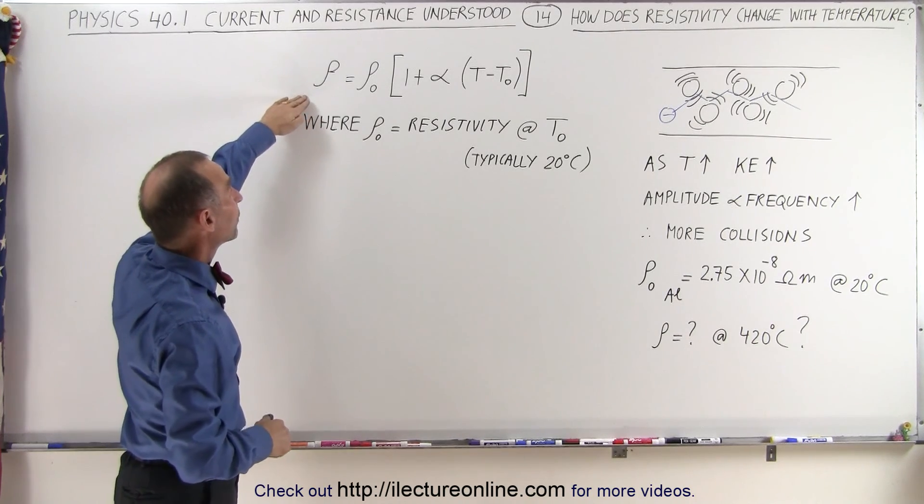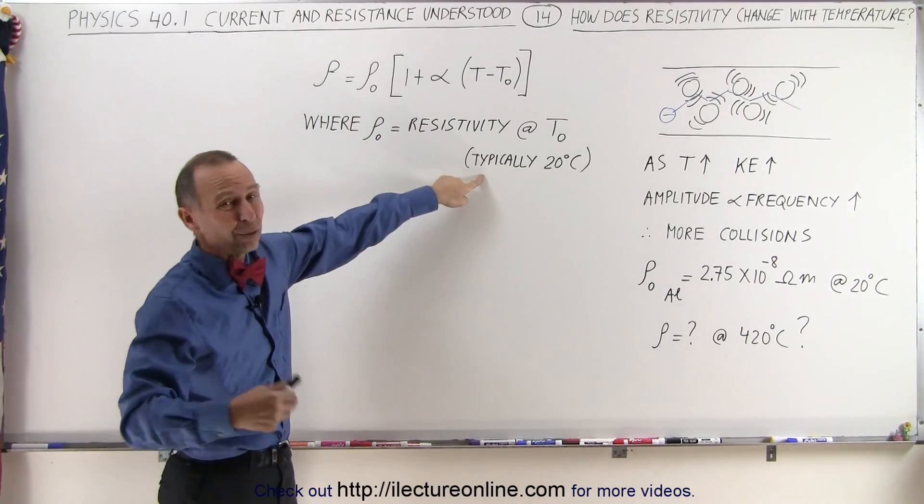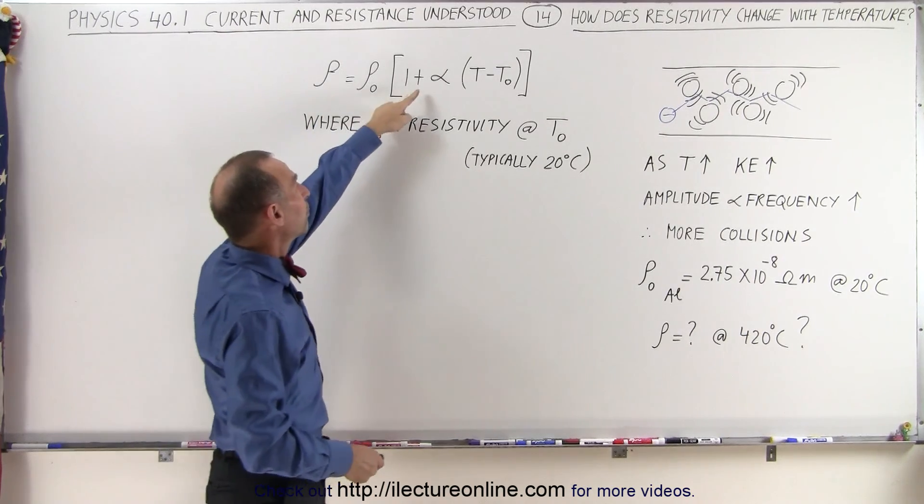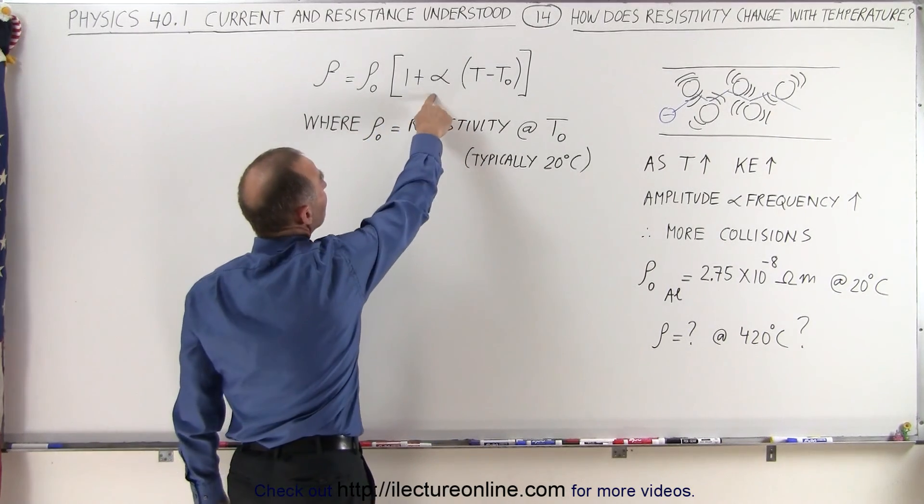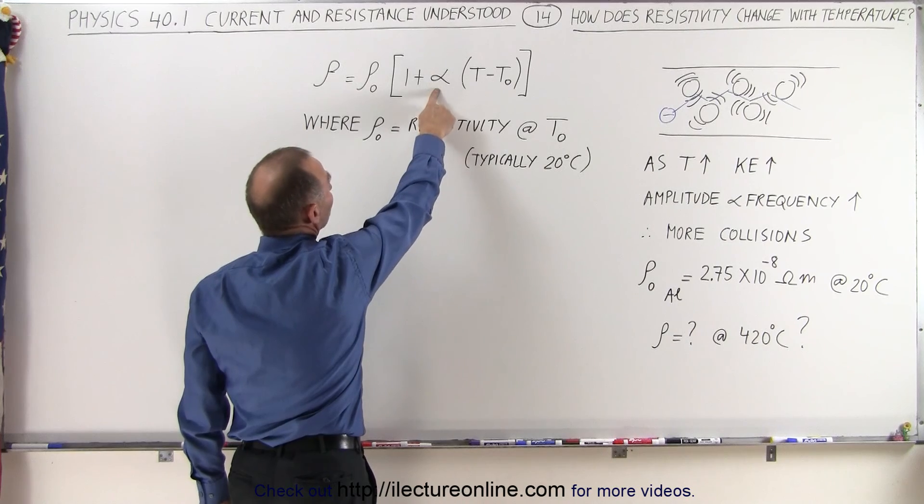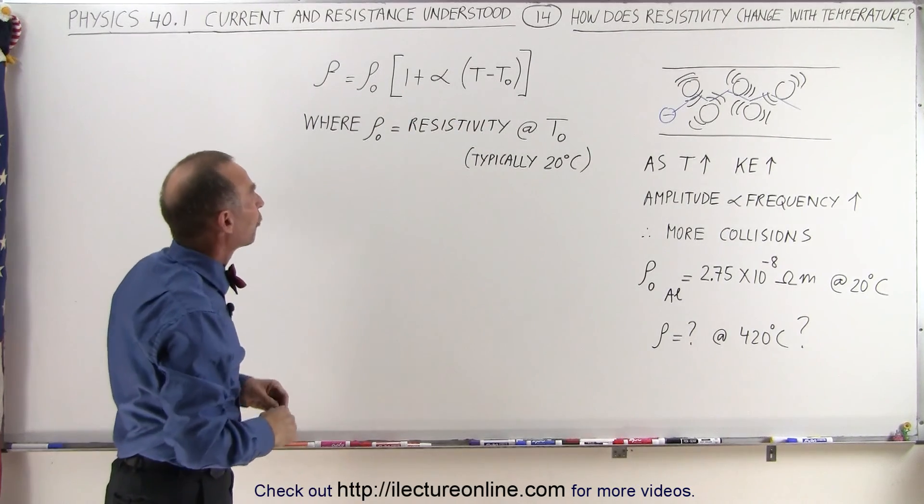Well, it turns out that here's the equation. We have to multiply the base resistivity at typically 20 degrees centigrade with 1 plus alpha times T minus T sub knot. And so this would be the coefficient of the thermal change caused by the increase in temperature for the resistivity.